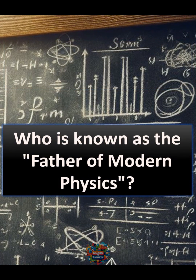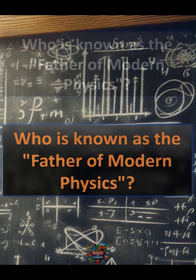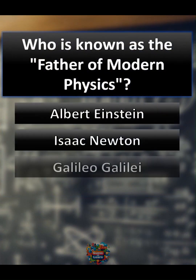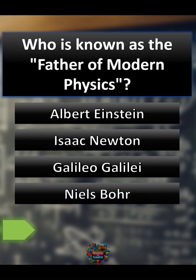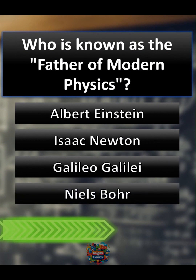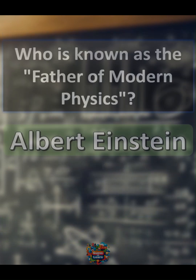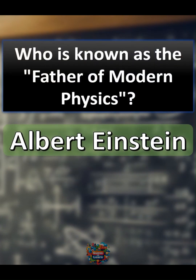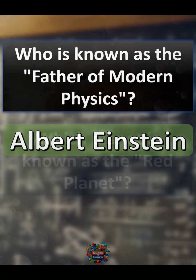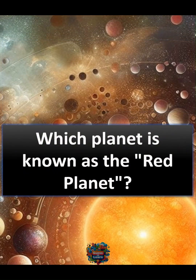Who is known as the father of modern physics? A Albert Einstein, B Isaac Newton, C Galileo Galileo, D Niels Bohr. Correct answer: A Albert Einstein.